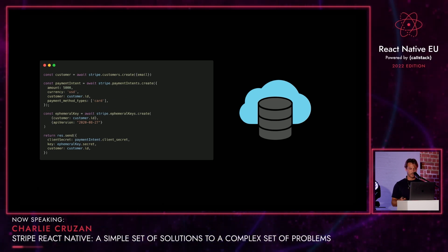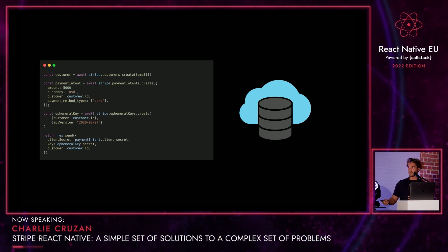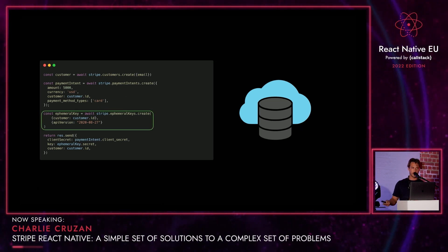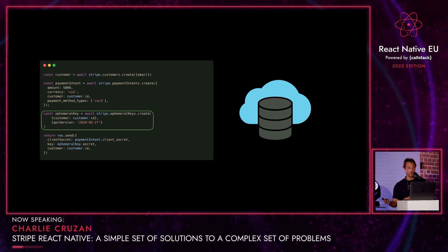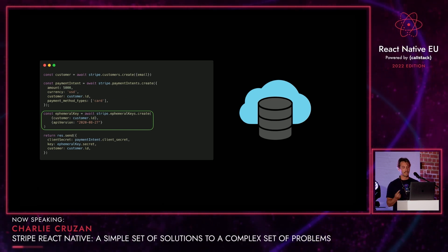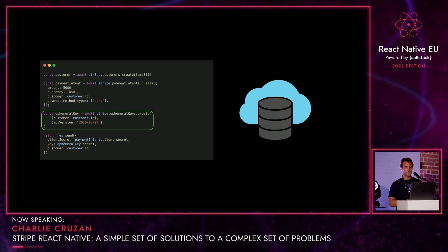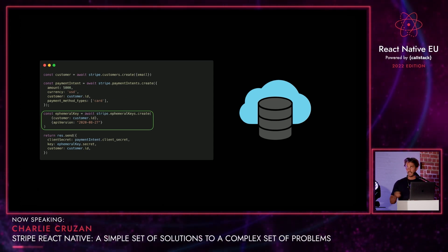Here's the server endpoint we'd theoretically be hitting. It's essentially the same thing as last time, except we added this ephemeral key logic. This key gives the Stripe mobile SDK a bit more power, so we send that back along with the payment intent client secret, our customer ID, and yeah — that's your server code.